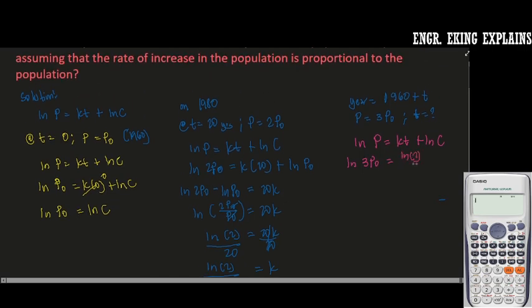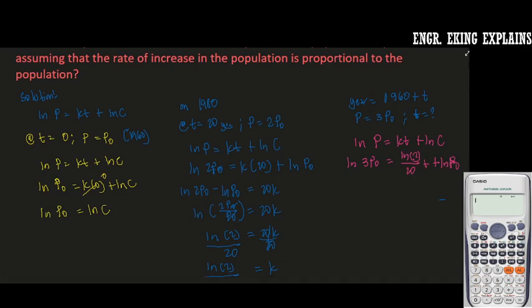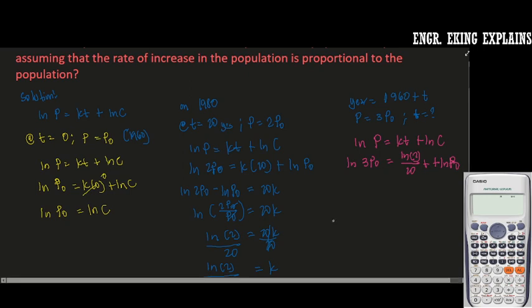ln 2 over 20 times T plus ln P0. We have already solved the value of our ln C in the first condition. So we transpose this one to the outside of the equations.